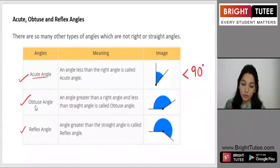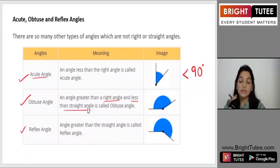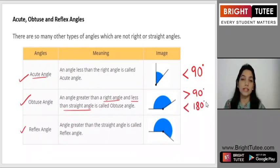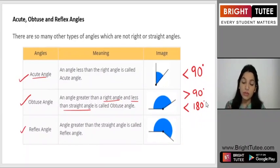Moving on to obtuse angle: an angle greater than a right angle but less than a straight angle is called an obtuse angle. It needs to be greater than 90 degrees but less than 180 degrees. So if we see an angle that lies between 90 and 180 degrees, we call it an obtuse angle.